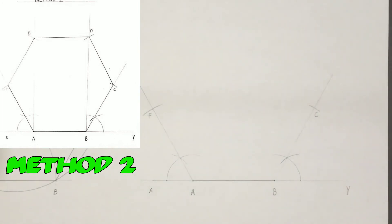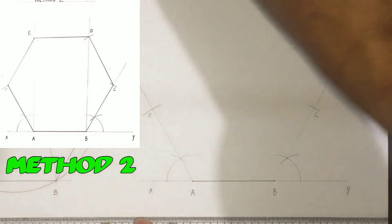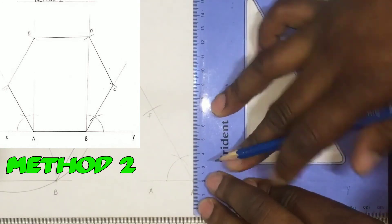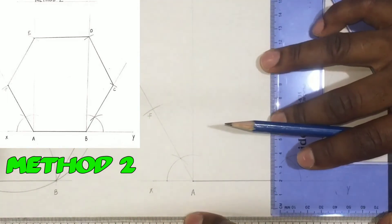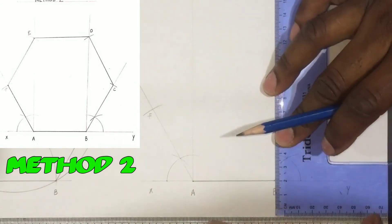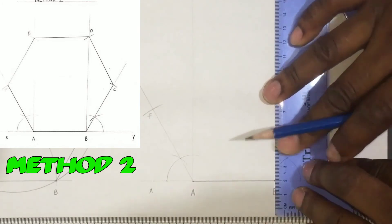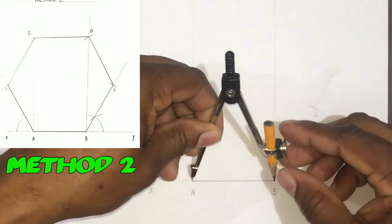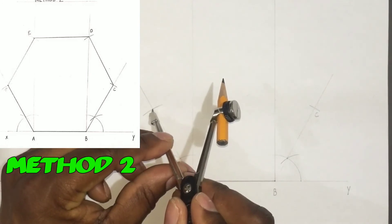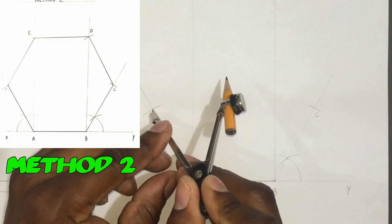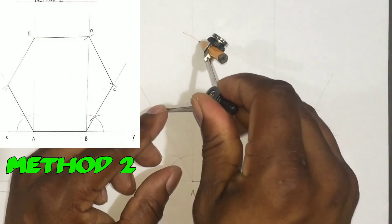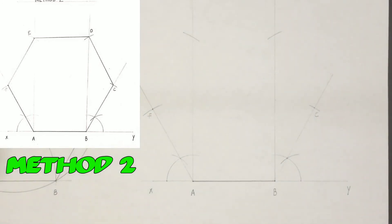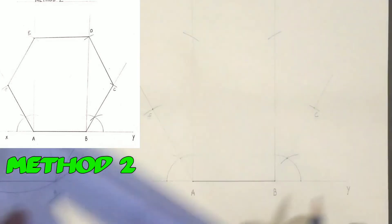We will now use our T-square and set square to draw a perpendicular line from A — ensure your T-square is held firm against your drawing board or table. We will also draw a perpendicular from B using our T-square and set square. With our compass open to A-B, we will use point F as our center to cut the vertical line we just drew. We will also use point C as center to cut the other vertical line. The two intersections give us point D and point E.